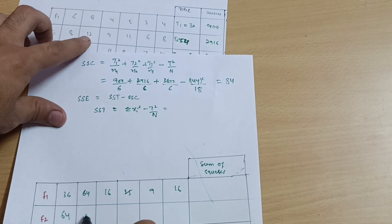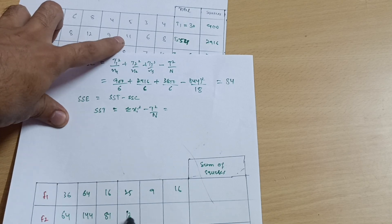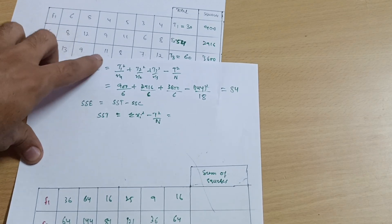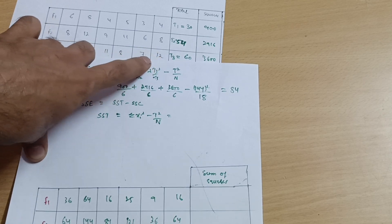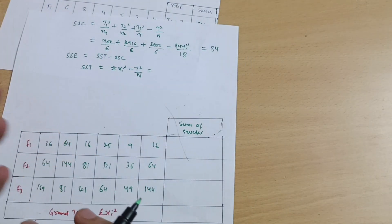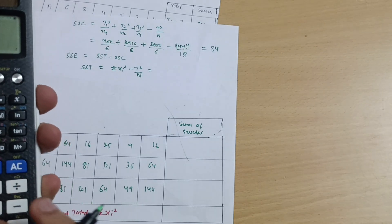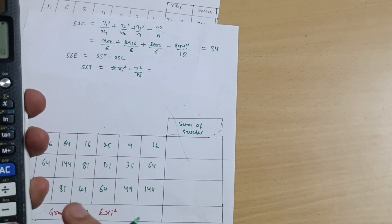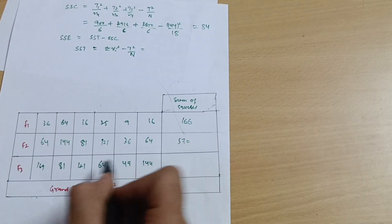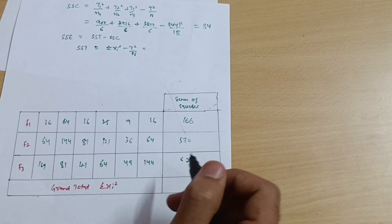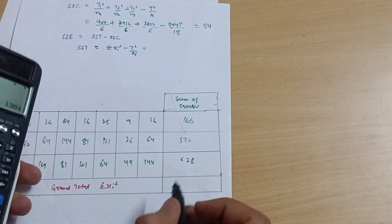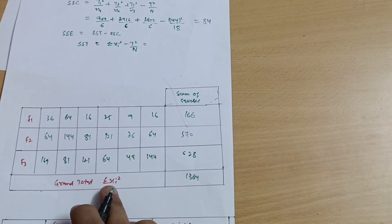Take squares of each number: 6² = 36, 8² = 64, 4² = 16, 5² = 25, and so on. Then 12² = 144, 9² = 81, 11² = 121, and 8² = 64, 7² = 49, 12² = 144. Now sum up each column: the first column sums to 166, the second column sums to 570, and the third column sums to 628.